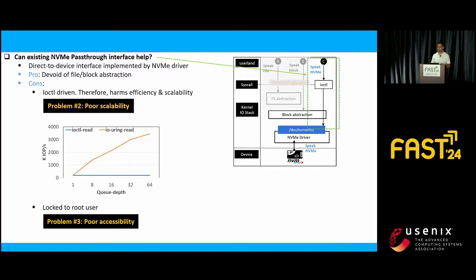We reviewed whether the existing NVMe pass-through interface, which was already present in the kernel, could help — shown by the green dotted rectangle in this figure. The advantage is that it skips the block and file abstraction, allowing user space to send a command very close to the actual NVMe command the device understands. But it has two problems. The first is poor scalability because this interface is tied to ioctl, which does not scale. For NVMe, known for speed, ioctl is not a good fit. The figure shows that io_uring read scales with queue depth while ioctl remains flat. The second problem is poor accessibility, as only the root user can use this interface.